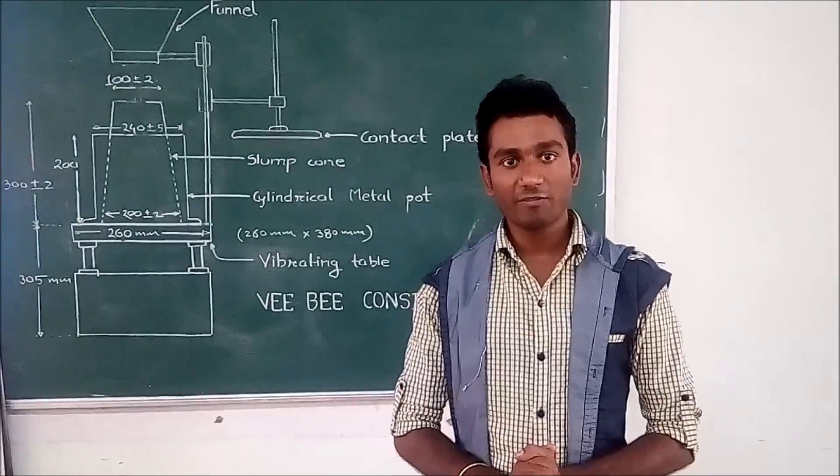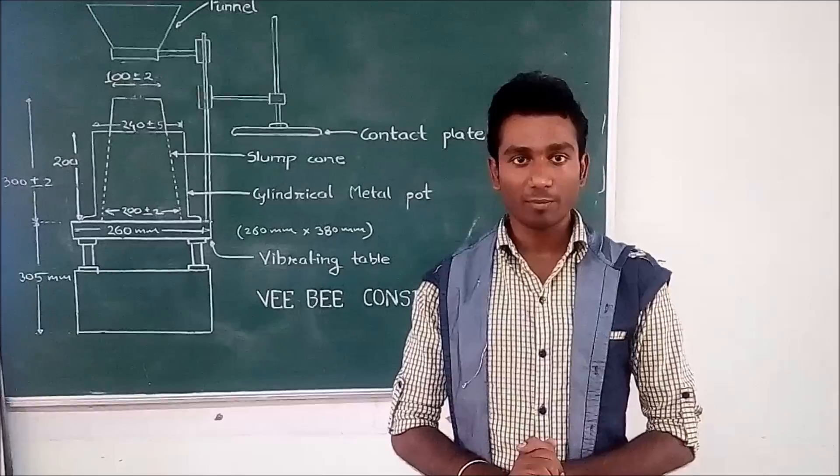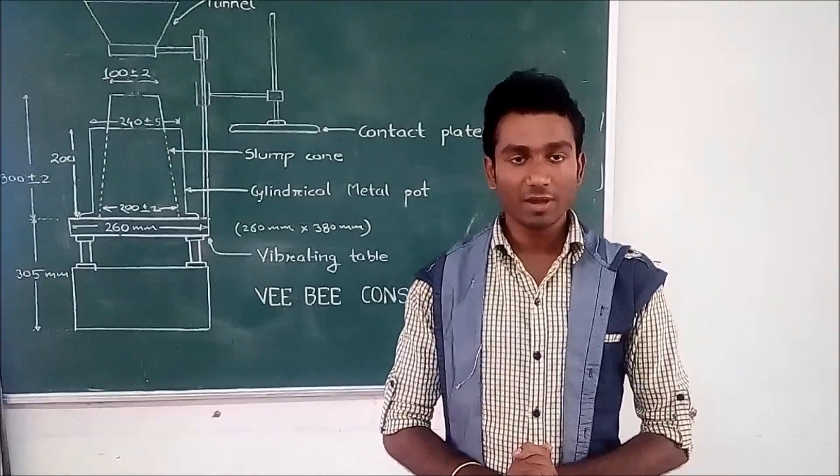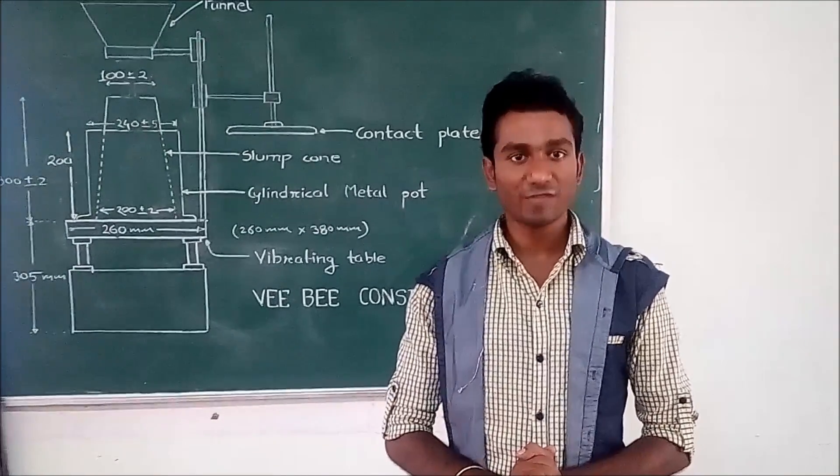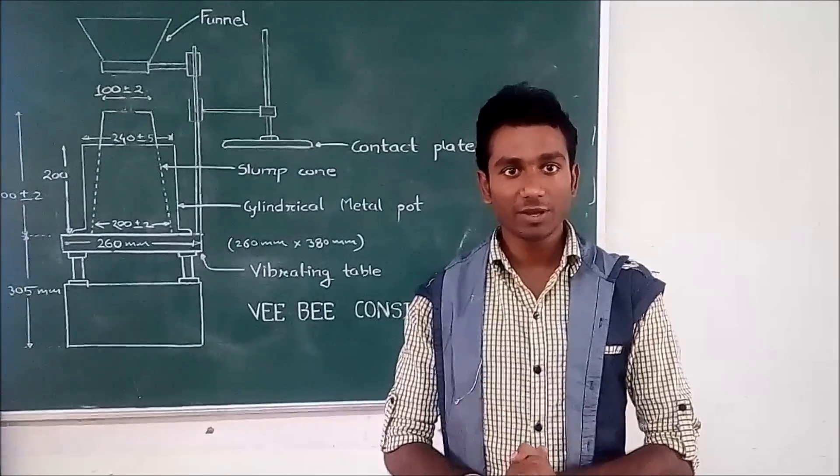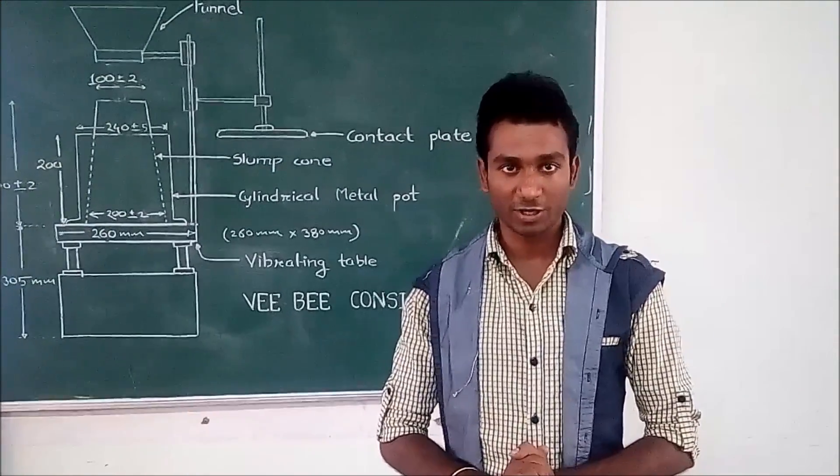According to IS 1199, there are total 4 methods to measure the workability. First one is the slump cone test, second one compacting factor test, third VB consistometer and fourth flow test.